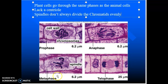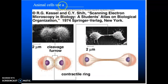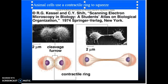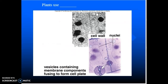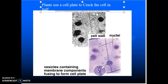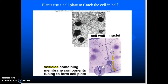So there's our plant cell — same phases: prophase, metaphase, anaphase, telophase, same general features and characteristics. Animal cells use a contractile ring to squeeze the cell in half, whereas plant cells use a cell plate to crack the cell in half. The cell plate is actually a line of vesicles — little bags that line up from one side of the cell to the next. They fuse together and eventually pop, cracking the cell in half. And now you have two plant cells side by side.